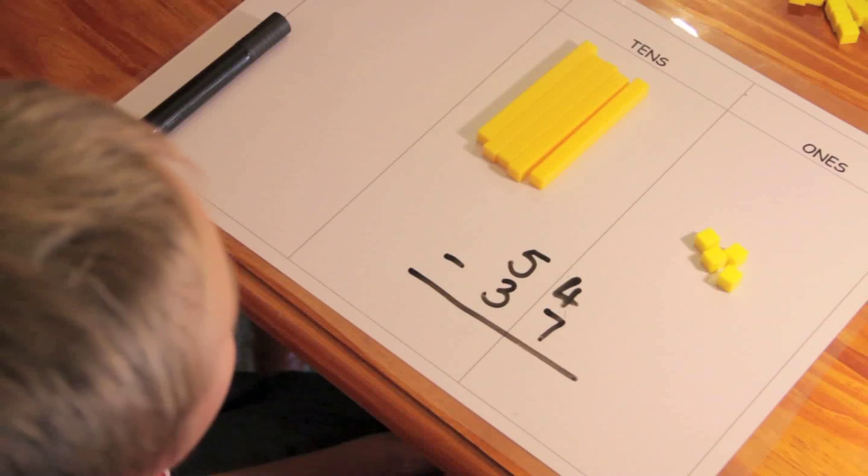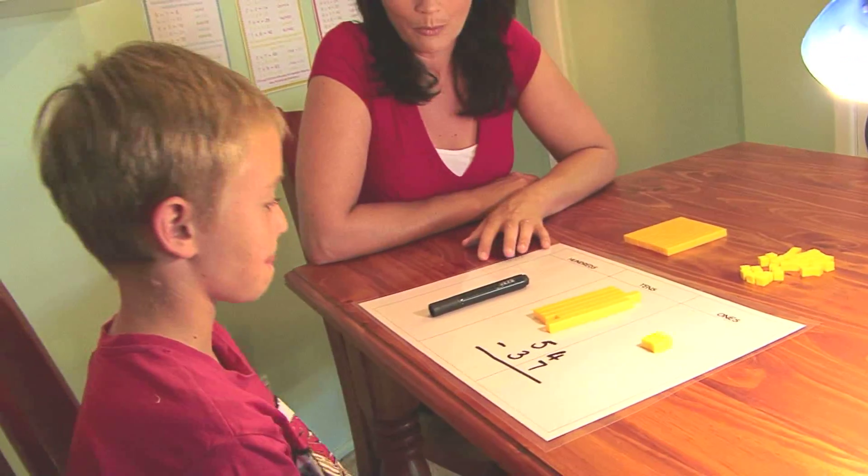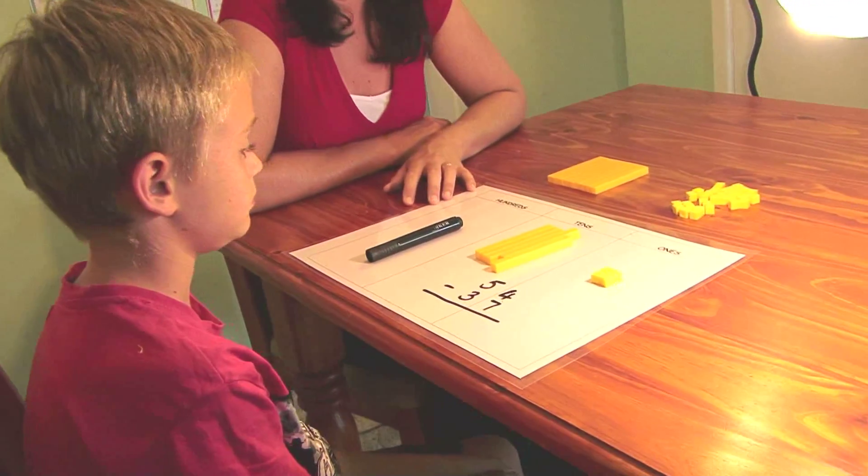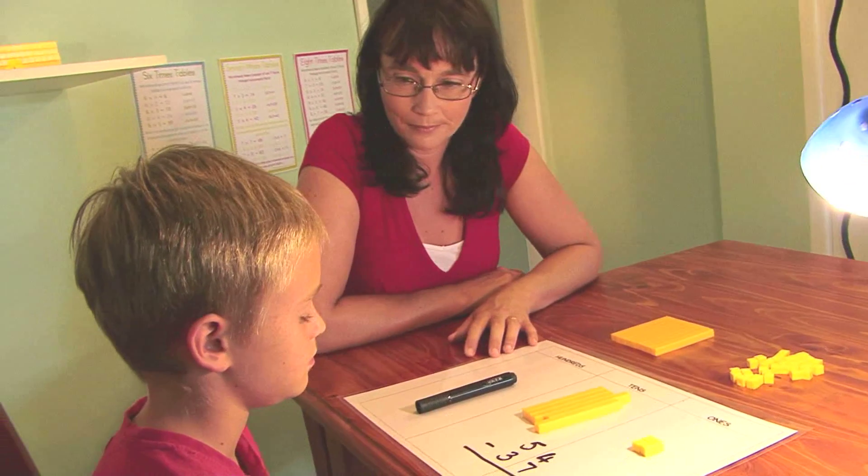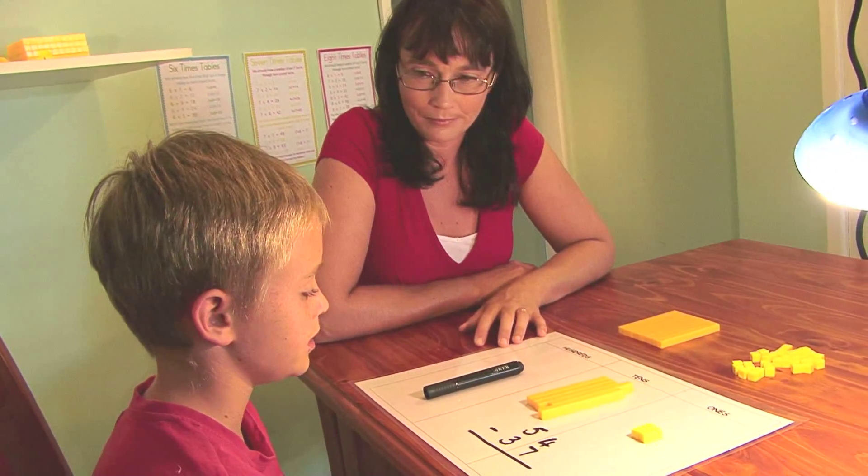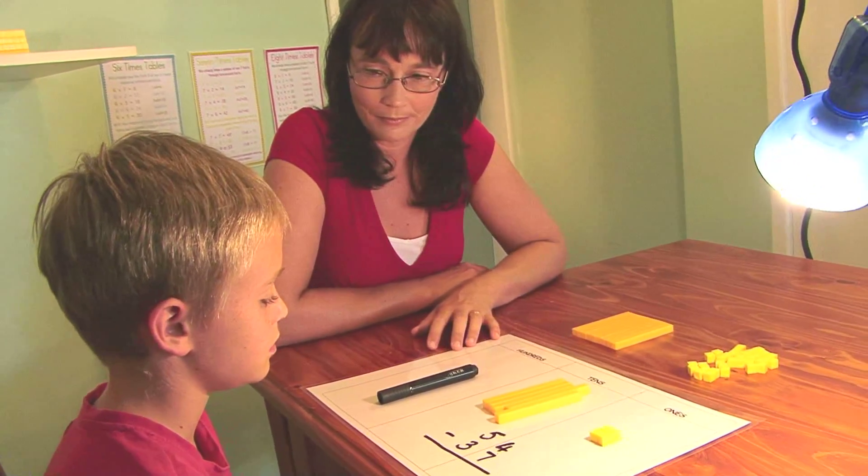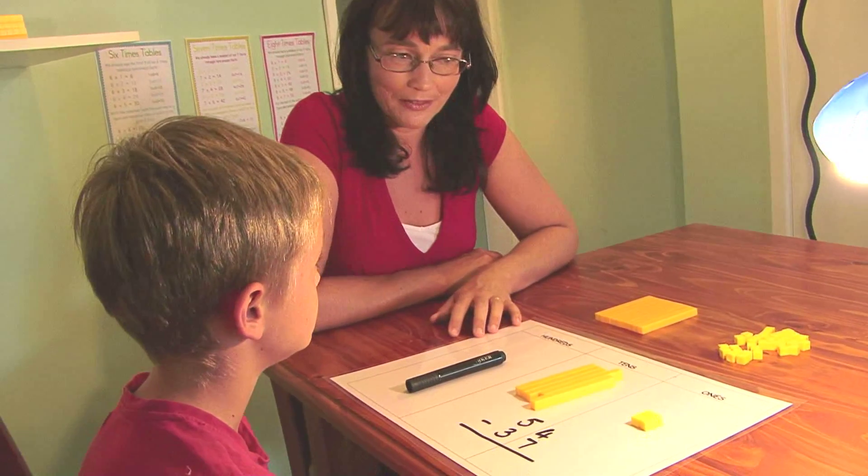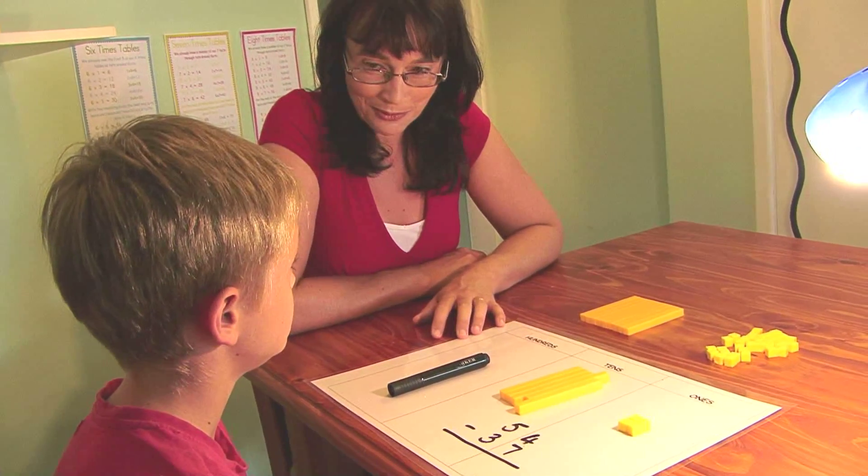Okay, what number is that? 54. Okay, what do we do first with the subtraction sum? We take seven from four. We have to do our ones. Can we take seven from four? No.